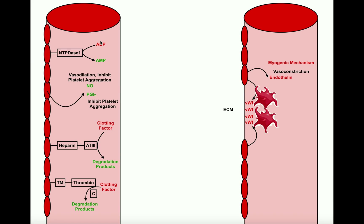So basically, healthy endothelial cells provide mechanisms to keep the blood vessel dilated, inhibit platelet aggregation, and inhibit clotting. But this all changes whenever we have damage to the vessel. In the damaged area, before there was damage, all of these mechanisms were operating — NTPDase1, nitric oxide, prostacyclin, antithrombin-3, and thrombomodulin. However, when that area of the vessel is damaged, all of that goes away, just locally in that vicinity.